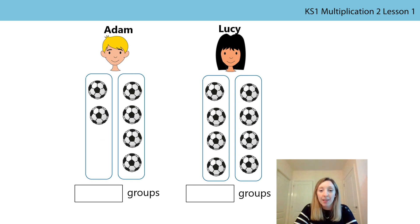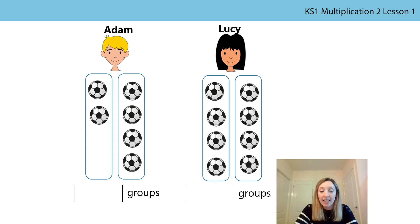Adam and Lucy each have some footballs and each of them has put their footballs into two groups. What do you notice about Adam's and Lucy's footballs — what's the same and what's different? Press pause and have a little think. They've both got two groups. Does Adam have the same or different number of footballs in each of his groups? He has a different number of footballs in each group — I can see he's got more footballs in one group than the other. Can you remember the word for when there is a different number in each group? Unequal. Adam's groups are unequal because there are a different number of footballs in each group.